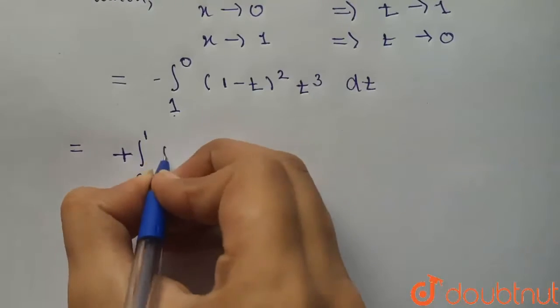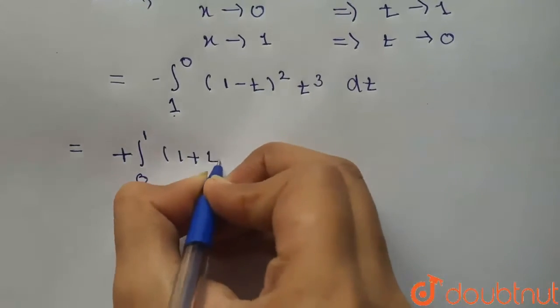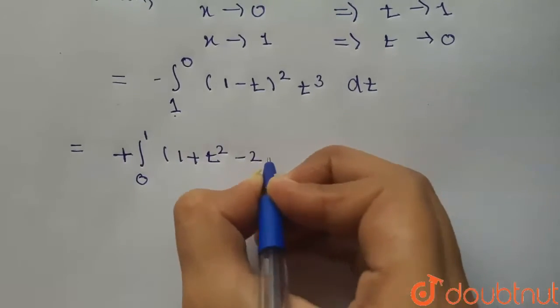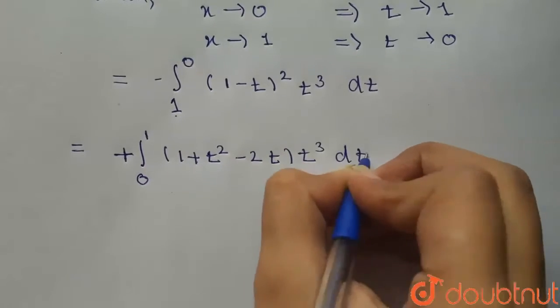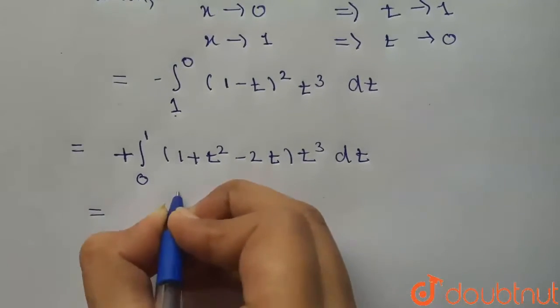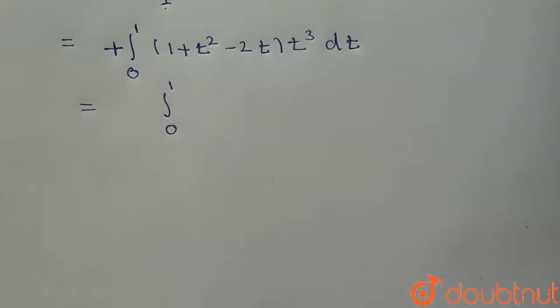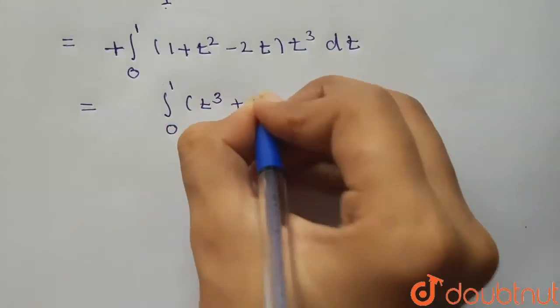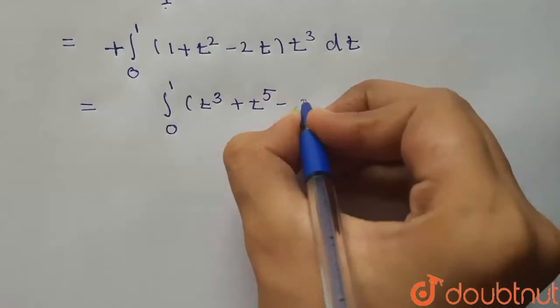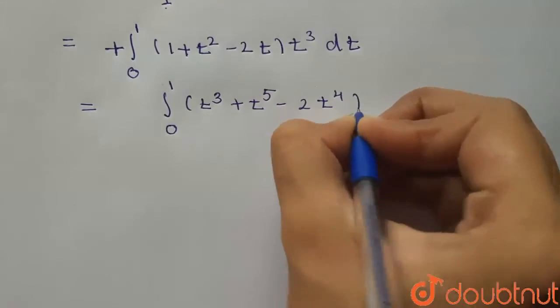Expanding (1-t)² gives 1 plus t² minus 2t. Multiplying by t³ gives us integral from 0 to 1 of (t³ plus t⁵ minus 2t⁴) dt.